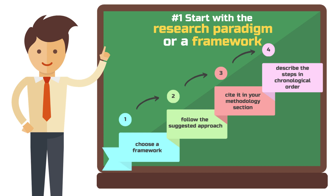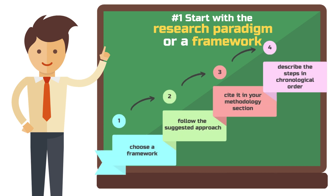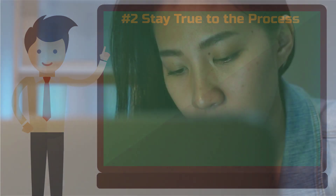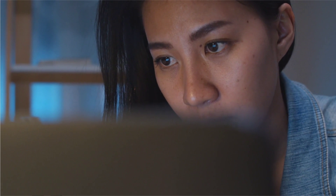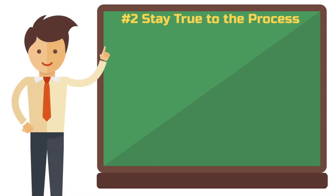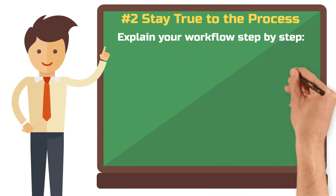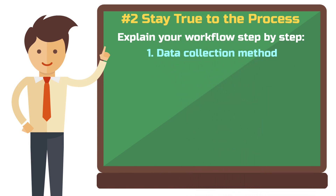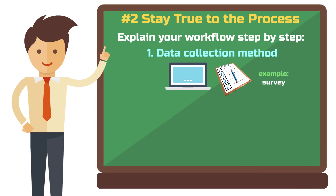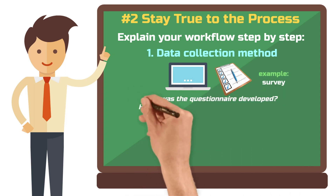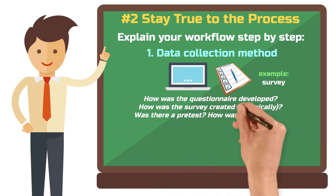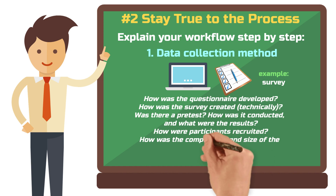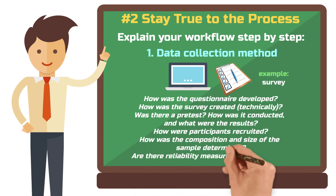You simply describe the steps in chronological order, which brings us to principle number two: stay true to the process. After you clarify what your overall approach is, you begin to describe each method, structuring this part step by step. You typically begin with the data collection method — for example, for a quantitative online survey: how was the questionnaire developed, how was the survey created technically, was there a pre-test and if so how was it conducted, how were participants recruited, and what was the composition and size of the sample? Are there any reliability measures you can report?